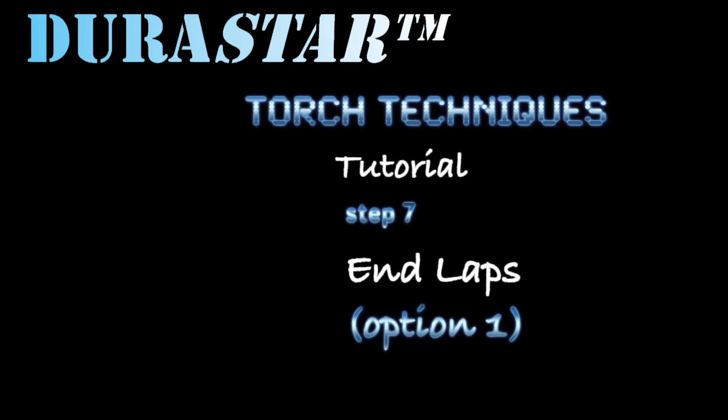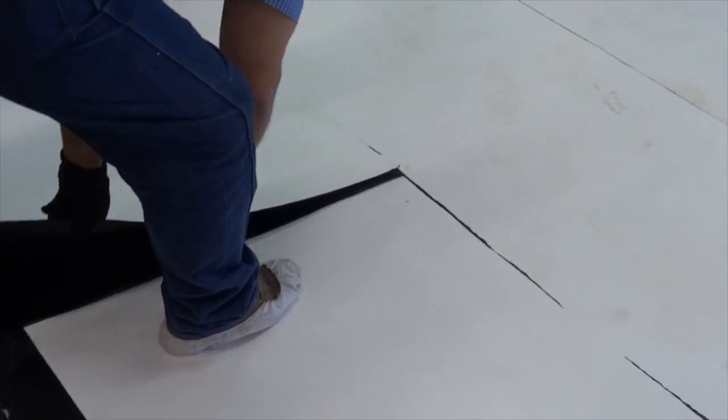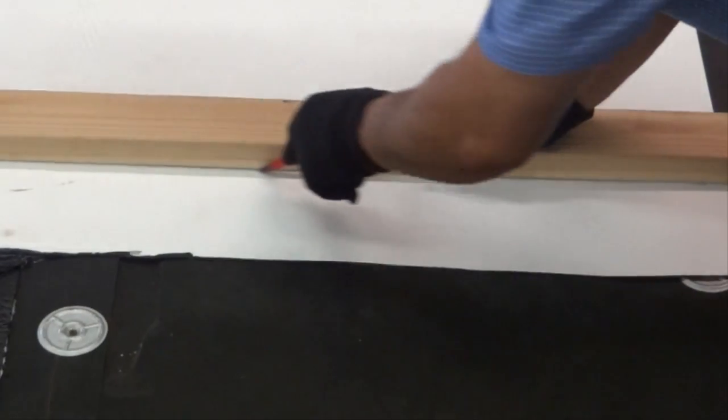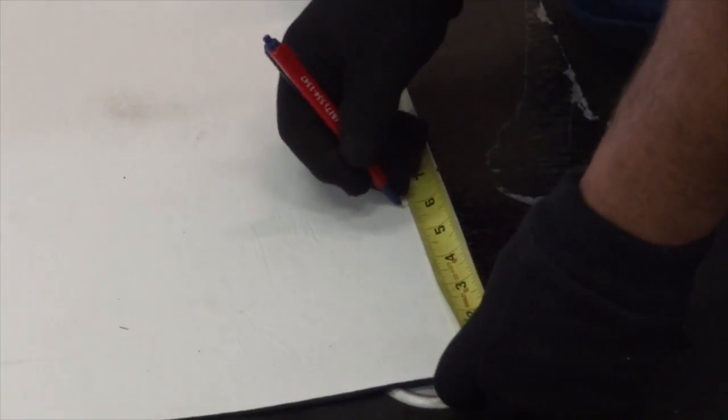Step 7: End Laps. For this step, there are two options available to follow. Option 1: When forming an end lap, make sure that there is sufficient material to form it. A minimum of 6 inches is required.